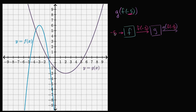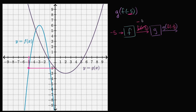Let's just do it step by step. The first thing we want to figure out is what is f when x is equal to negative five — what is f of negative five? When x is equal to negative five, the function is right over here. It looks like f of negative five is equal to negative two.